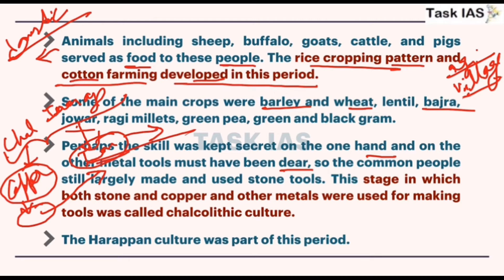When you compare and connect Chalcolithic with Neolithic and the Iron Age, you can understand how gradual changes were happening and how one culture was more advanced in technology and economy compared to the preceding culture. The stage in which both stone and copper/other metals were used for making tools is known as Chalcolithic culture. Harappan culture was part of this period.